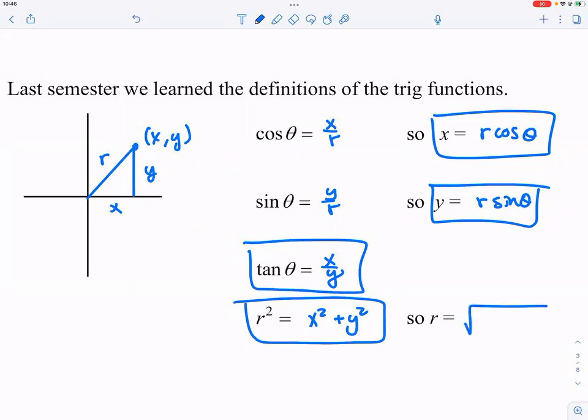Now, of course we can say what R is. R is going to be square root of X squared plus Y squared. Of course.